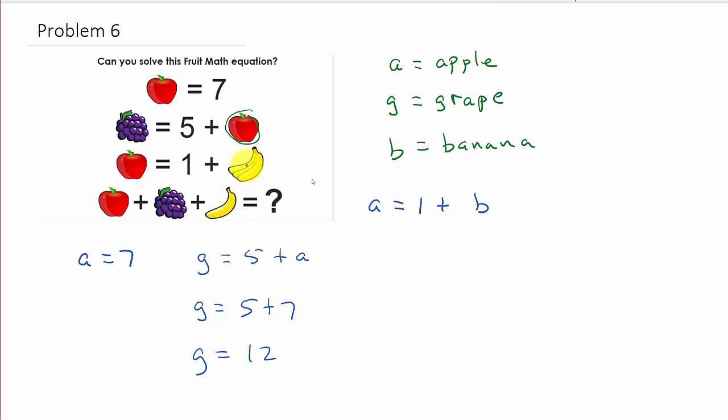Alright, so I guess what we could do here, we might want to come up here and say B is equal to 1 banana. Since we have a picture with 3, and here we have a picture with 1.